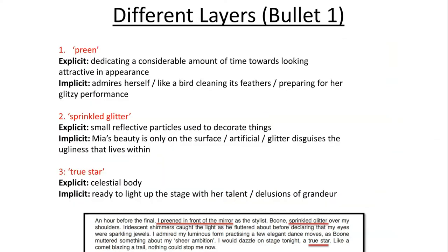So of course 'preen' is the powerful word in that first image. You need to explain what is meant by the word preen within its given context — it refers to one dedicating a considerable amount of time towards looking attractive in appearance. In terms of what it means implicitly, you might explore the fact that Mia admires herself, admires her appearance. You might also liken Mia to a bird meticulously grooming her feathers, preparing herself for a glitzy performance. In terms of Boone sprinkling glitter over her, glitter refers to small reflective particles used to make things more attractive. But implicitly, maybe we could explore that Mia's beauty is only on the surface — glitter is very artificial and very temporary. Glitter is perhaps disguising the ugliness that lives within Mia.